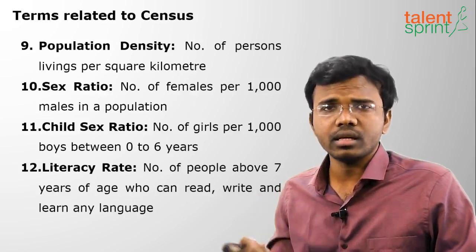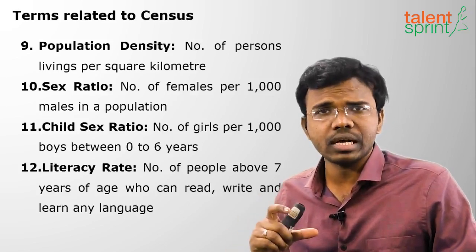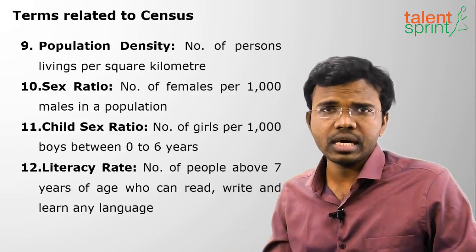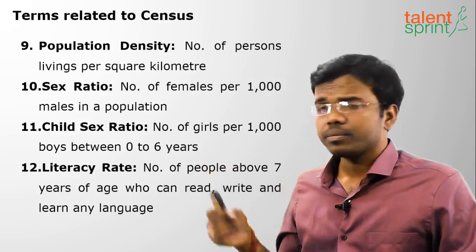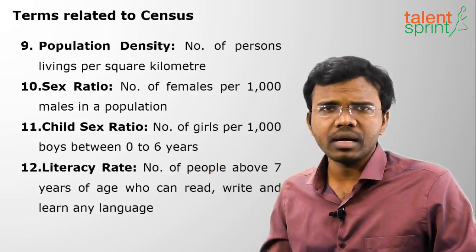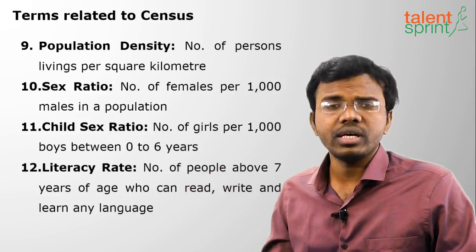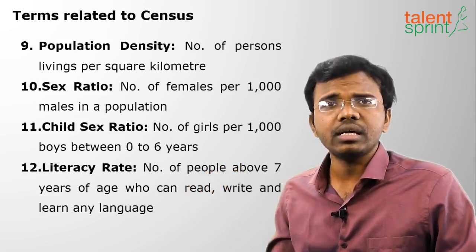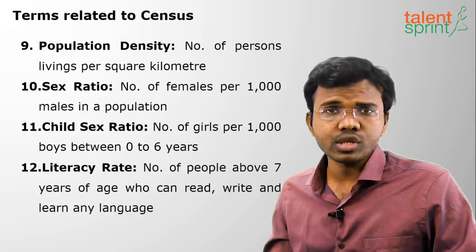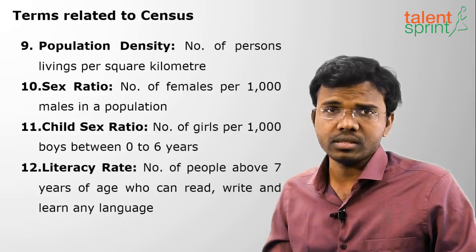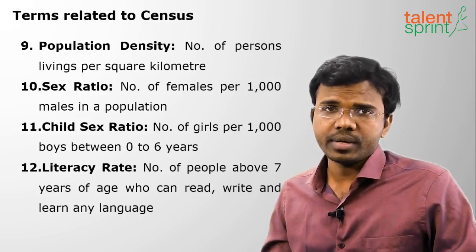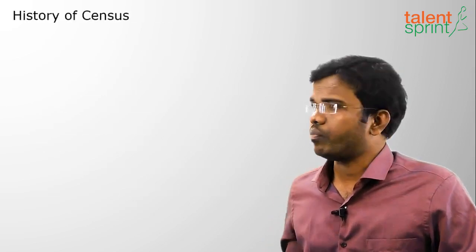A person is considered literate if they can read and write any language — not only the 22 official languages, but also the many dialects and tribal languages. They should also be able to learn any language. Such a person above seven years of age is called a literate person in India.